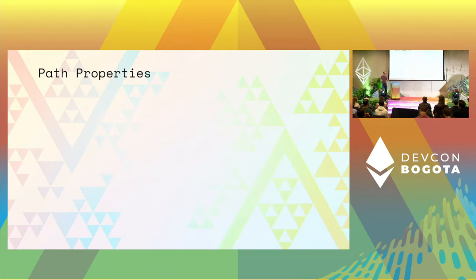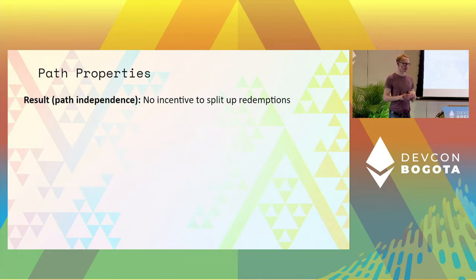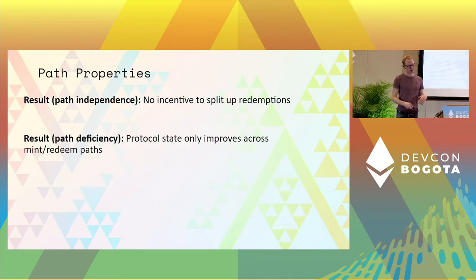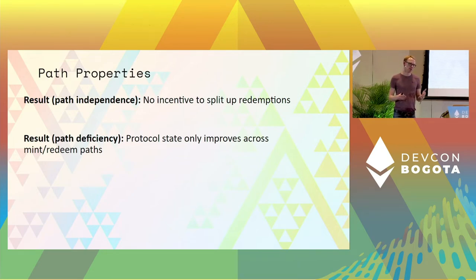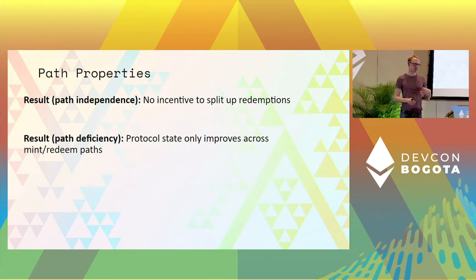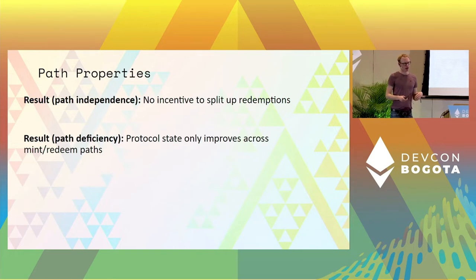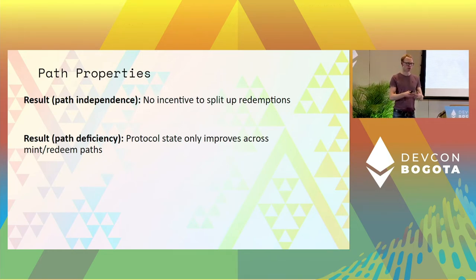This system has a number of interesting properties. One result you get very easily is that there's no incentive to split up redemptions. Mathematically that's because you're computing an integral, and you can always split an integral on different parts — it doesn't matter if you compute the parts or the whole thing. There's also a path sufficiency result, which is a bit more interesting: the protocol state is going to improve over time. If you implement the system, your reserve does not crash completely to zero, and as people come and redeem, your system is going to recapitalize itself over time. This is exactly what we want — long-term survivability of the system.